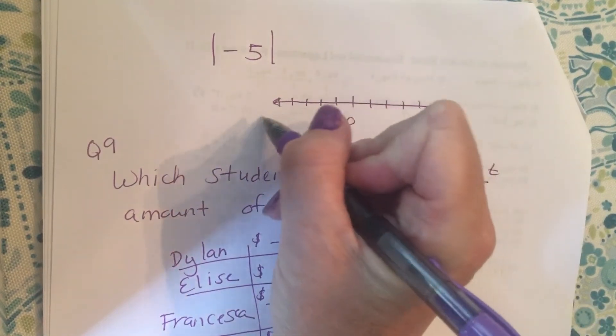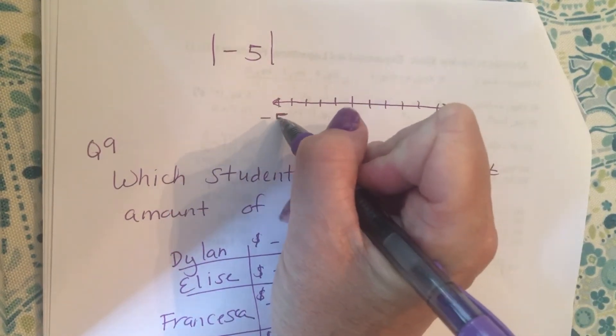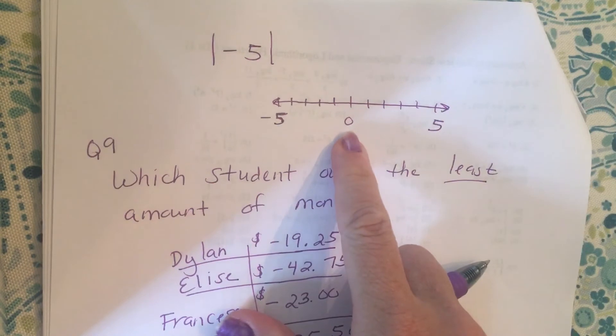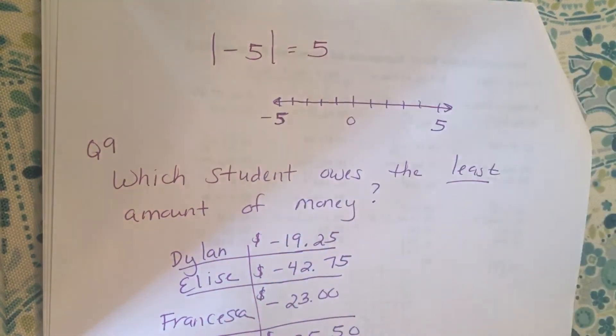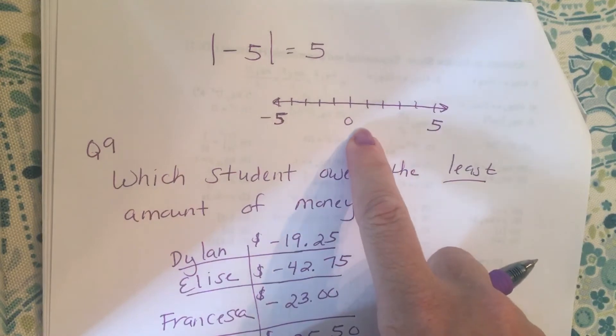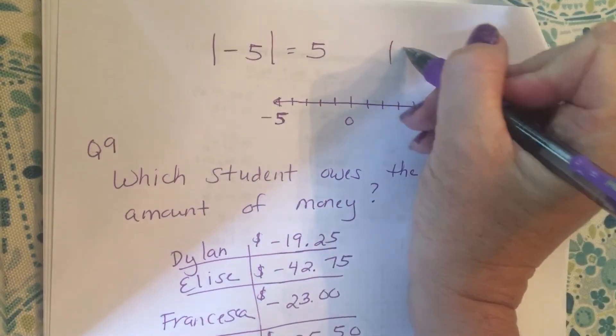Both of them are five digits away from zero. Both of them actually have the same absolute value. The absolute value of negative five is five because it's five integers away from zero.